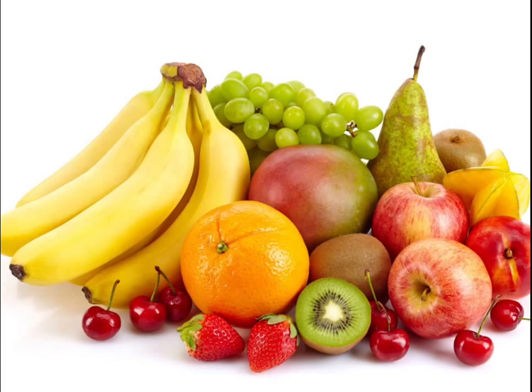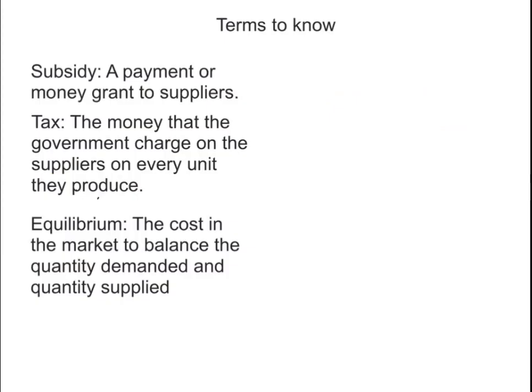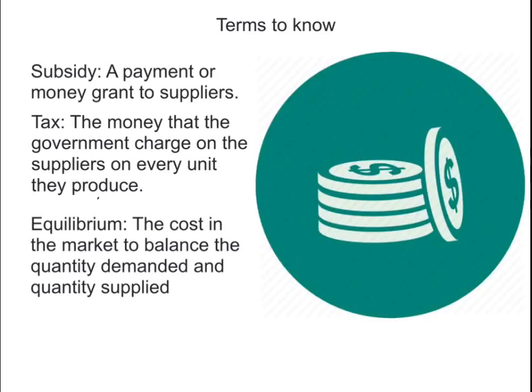Before we start our explanation of what's happening in the markets, here are some terms to know. A subsidy is a payment or money grant to suppliers. This works as an incentive to produce more and also lowers the costs of production.